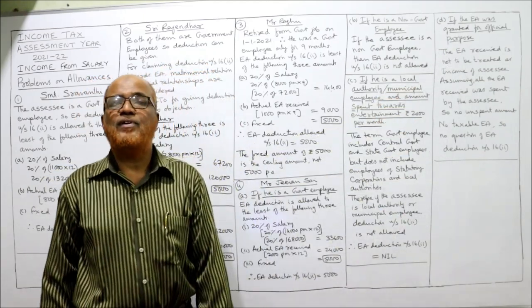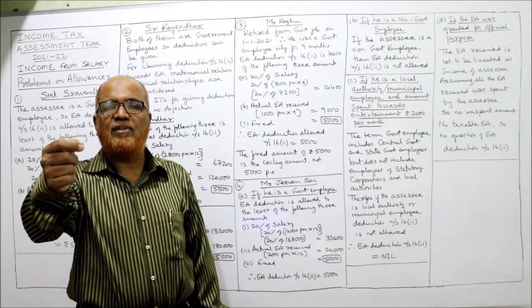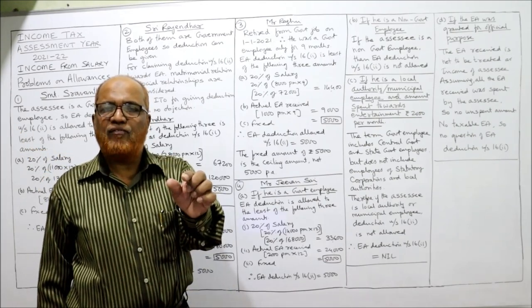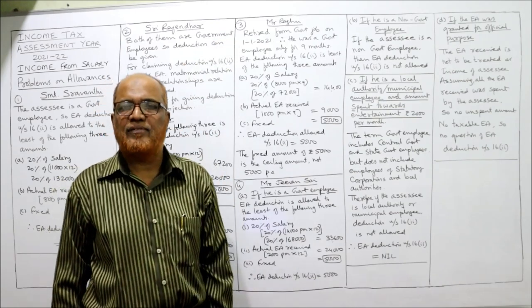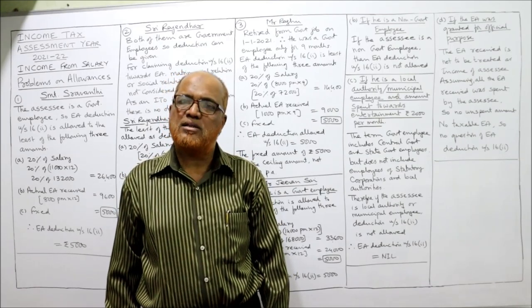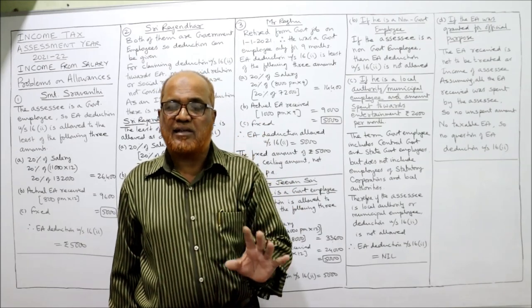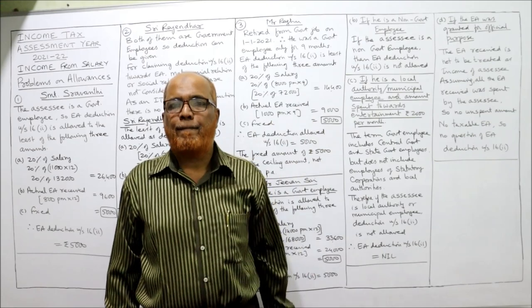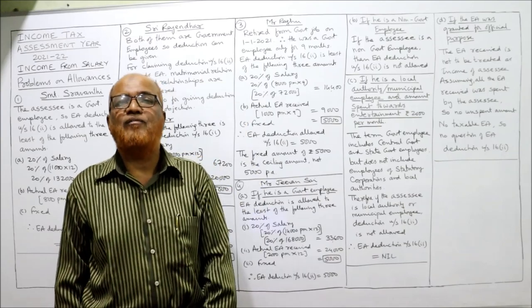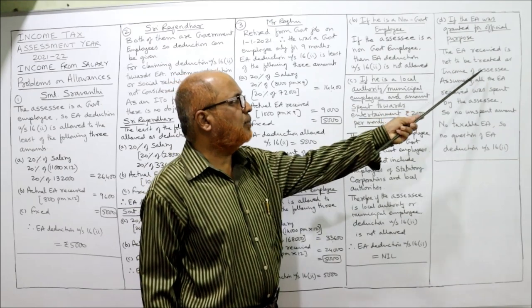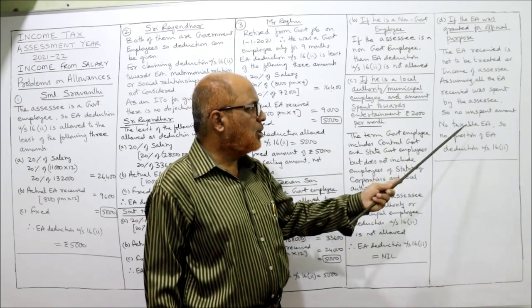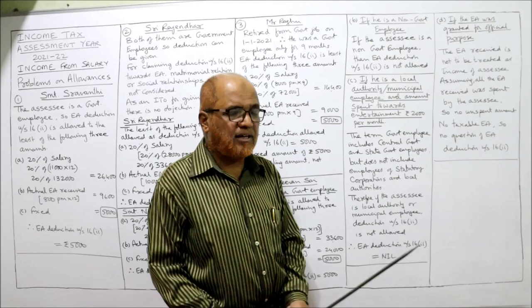Case D: if the EA was granted for official purpose — when entertainment allowance is given for official purpose, it is not to be treated as income at all. Since it is not included in allowances as income, there is no question of EA deduction under Section 16-2. If any unspent amount exists, that would be taxable, but deduction under Section 16-2 would not apply. Assuming all EA received was spent by the assessee, there is no unspent amount, no taxable EA, and therefore no question of EA deduction under Section 16-2.